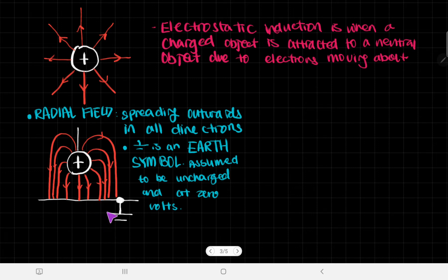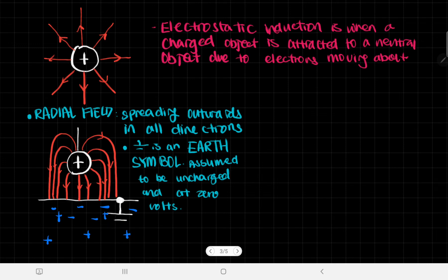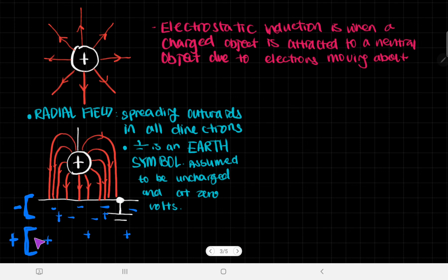If there were an equal number of electrons and protons in the neutral object, the electrons are attracted to the positive charge and move up to the top. The protons remain evenly distributed throughout, which means the top part has an overall negative charge and the bottom part has an overall positive charge. The attractive force between the negative top and the positive charge is stronger than the repulsive force between the positive bottom and the positive charge, because it is further away — and that's why the charged object is attracted to the neutral one.